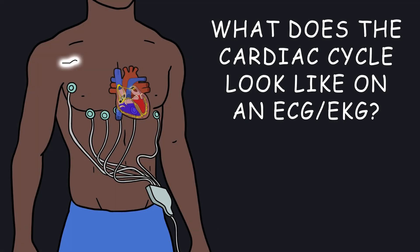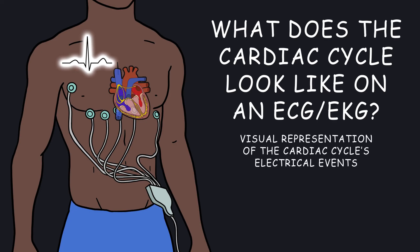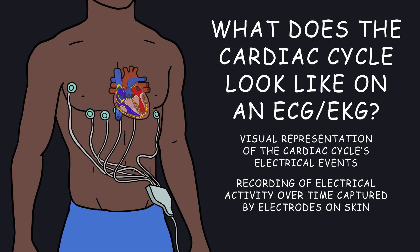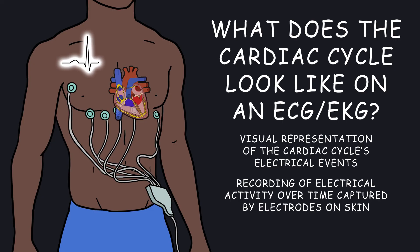Now let's discuss what the cardiac cycle looks like on an ECG or EKG, which is a visual representation of the cardiac cycle's electrical events. This recording of electrical activity over time is captured with the help of electrodes on the skin's surface. It features a series of characteristic waveforms and intervals that correspond to electrical and mechanical events that occur during each heartbeat.